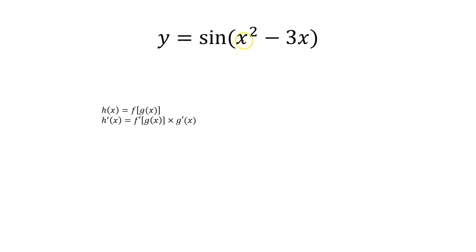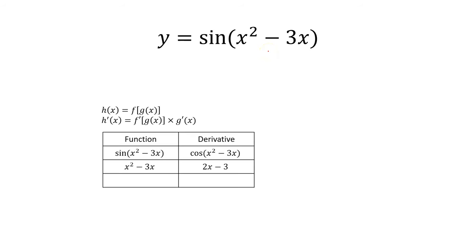Let's identify our functions. The outside is sine of some quantity, and then the inside is x squared minus 3x. So we're going to have to take the derivative of sine, leaving the inside alone, and then take the derivative of the inside and multiply them together — because again, this is a compound function. The derivative of sine leaving the inside alone gives us cosine of x squared minus 3x. And the derivative of the inside is just 2x minus 3. So y prime is cosine of x squared minus 3x times 2x minus 3.